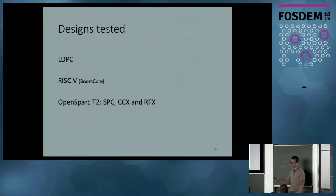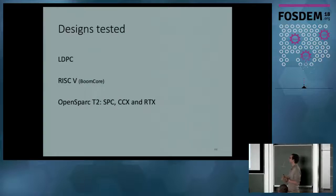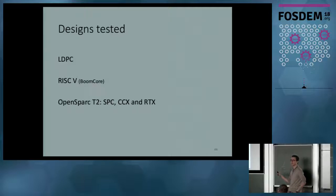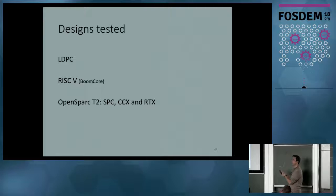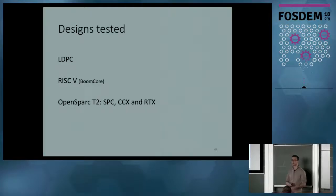This flow has been tested on several designs, including the LDPC, which is a very small core for error-correcting code, one version of RISC-V from Berkeley University, and some modules of the OpenSPARC T2 — specifically the SPC (the core), the CCX (the memory crossbar), and the RTX (the Ethernet module). All of them have different properties, different sizes, and different amounts of gates and nets, so it is interesting to see if our flow is robust to different kinds of designs.